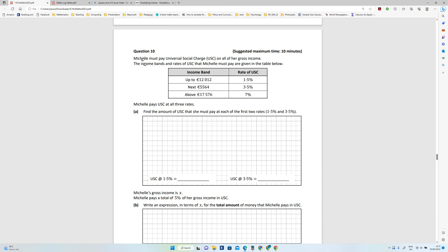Okay, so 2023 Junior Certificate Higher Level Maths Question 10 is about Universal Service Charge. Michelle must pay USC on all of her gross income. The income bands that she must pay are given in the table below.